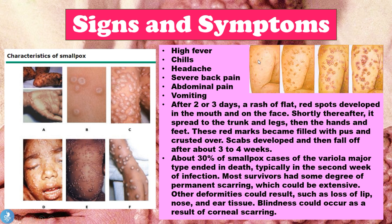Initially the rash would start with red spots, which would fill up with pus over the following days and become fully formed pustules, then break open, ooze viral fluid, and then scab and dry up, with the scabs typically falling off in about three to four weeks. Notably, 30% of smallpox cases of the variola major type ended in death, typically occurring in the second week of infection. Most survivors had some degree of permanent scarring, and other deformities could result such as loss of lip, nose or ear tissue, and blindness could occur as a result of corneal scarring.